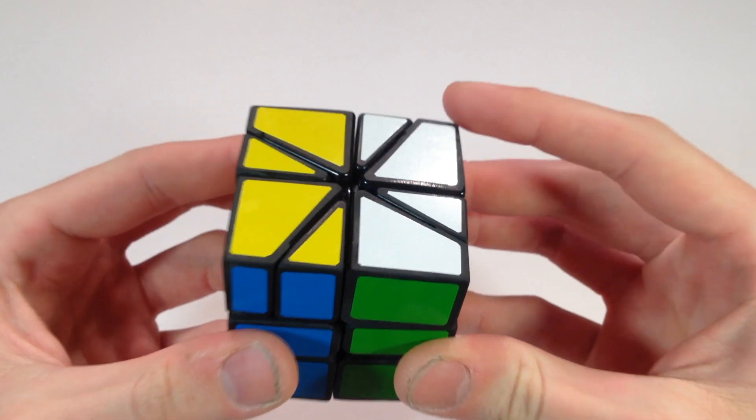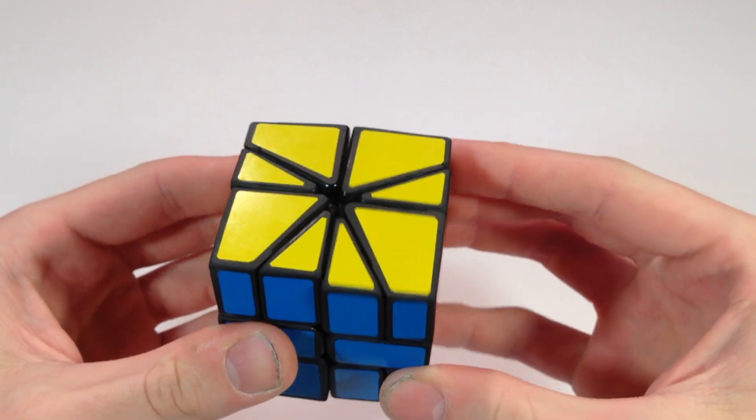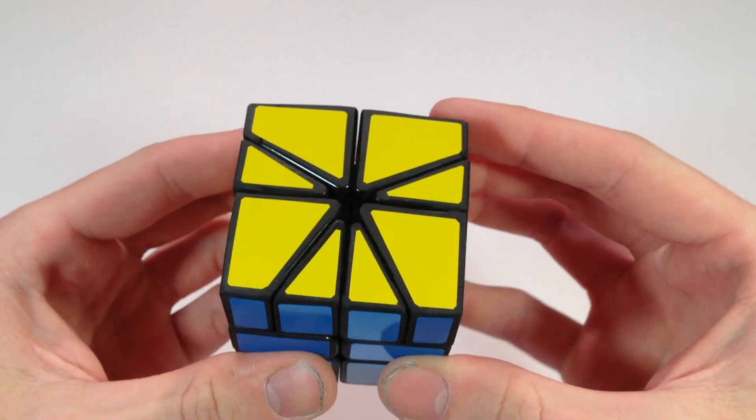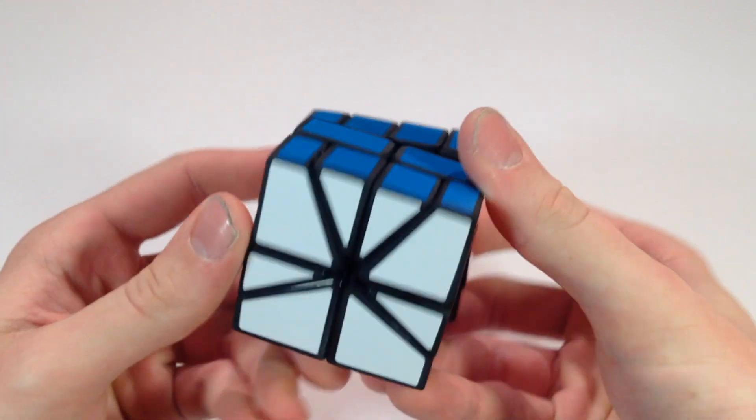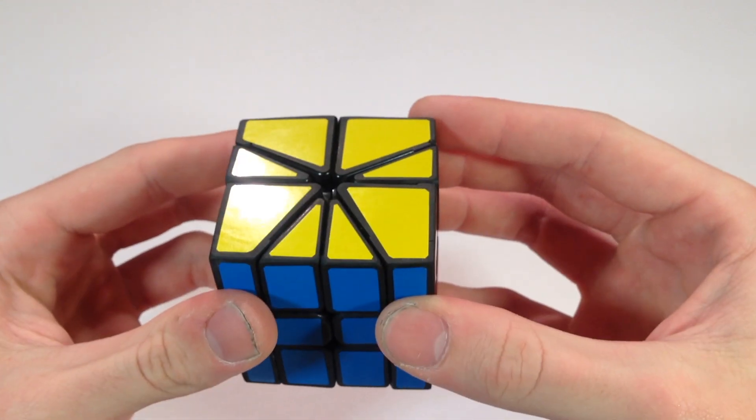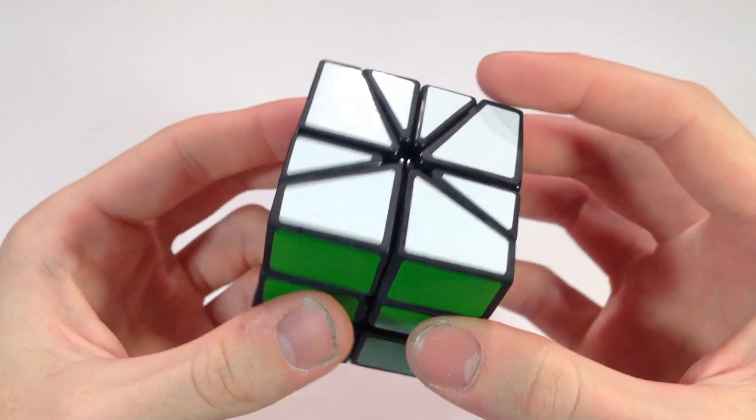So you could use the same strategy just with this color scheme, or it might be interesting, it might be slightly different to actually solve it like this, where you get each face this way. And as usual, I'll give this thing a full scramble.